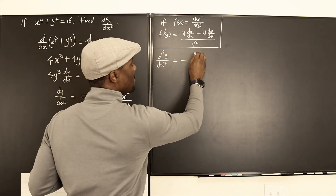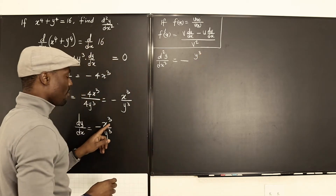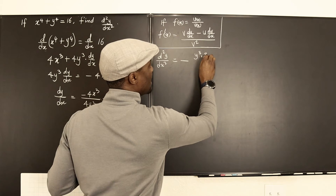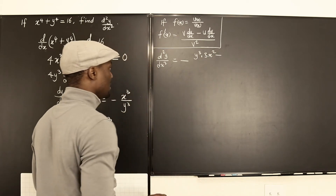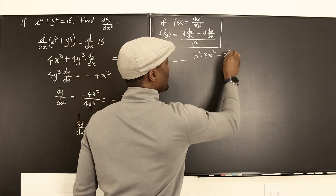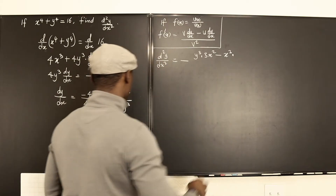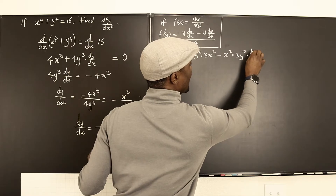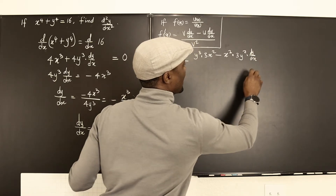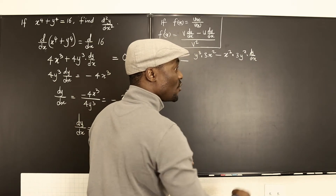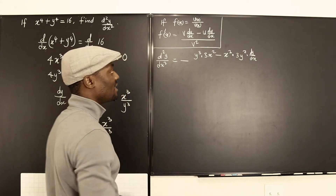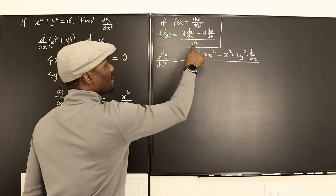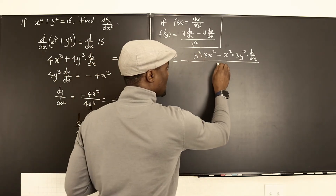We're going to have y cubed multiplied by the derivative of the top — that's 3x squared — minus x cubed multiplied by the derivative of the bottom, which is 3y squared times dy/dx. Don't forget: every time you differentiate y, you have to multiply by dy/dx. All of that is divided by y cubed squared, which is y to the sixth.